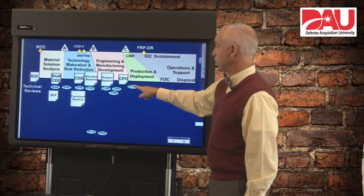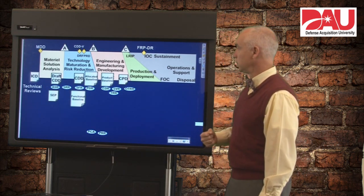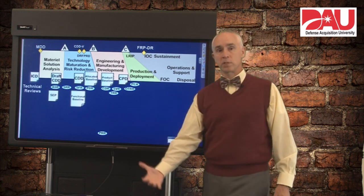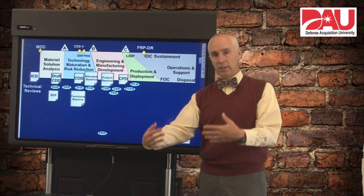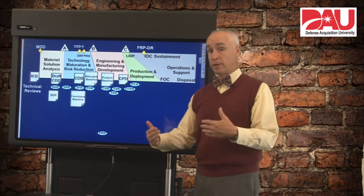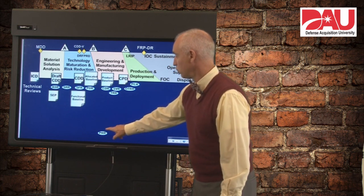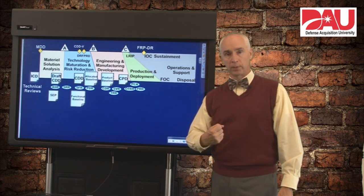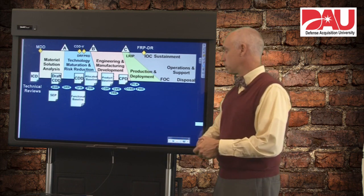In production and deployment, we would expect to have an Operational Test Readiness Review to get ready for our big final exam — the IOT&E on our LRIP systems. We would conduct a Physical Configuration Audit on one of our first LRIP systems coming off the line, comparing our design and drawings with the actual physical system to make sure it matches up and that we have a physical baseline for configuration management purposes. Before we go to full rate production, we're going to do a Production Readiness Review that assesses how well we did in low rate initial production and confirms our risk is low enough to proceed to full rate production.